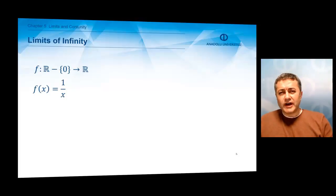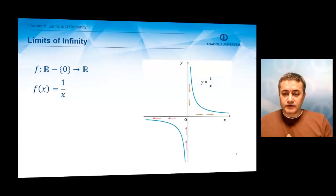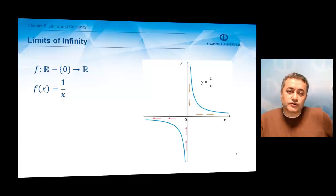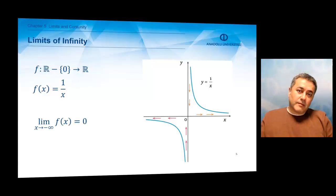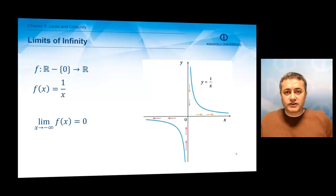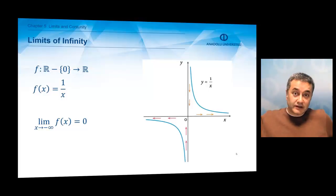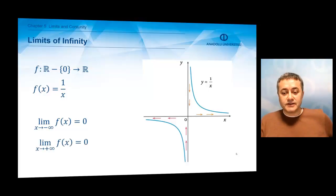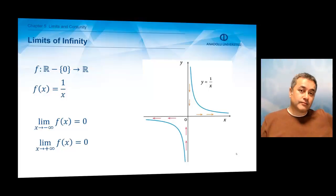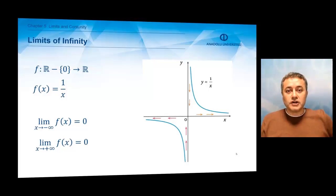We may also have limits at infinity. Instead of considering f(x) equals 1 over x at x equals 0, let us consider this function as x approaches infinity. If I'm approaching minus infinity, what does the function do? The function gets smaller and smaller with negative values and approaches 0. If I'm approaching plus infinity, the function's values get smaller and smaller from positive values and approach 0. So the limit at infinity for this function is 0.